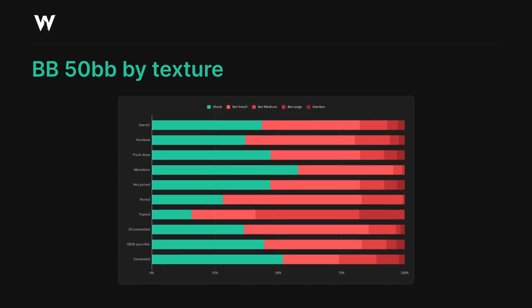When it comes to texture, we see exactly the same trends here as we did before: more betting on rainbow, disconnected and paired or tripled textures, and less betting on monotone, connected or unpaired flops. The reasons for this are the same as they were before — these boards are more favorable for the preflop raiser's range overall.